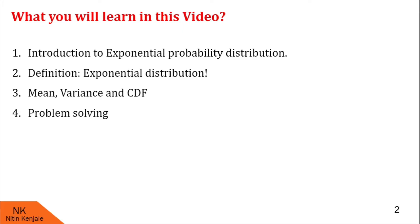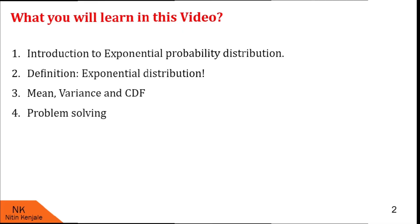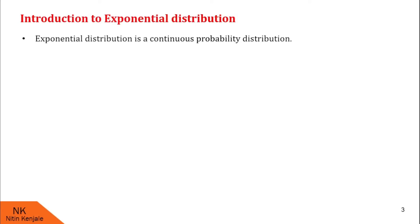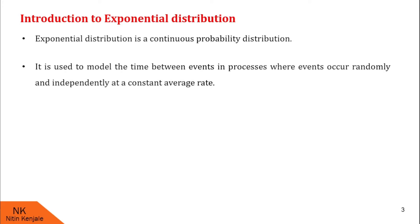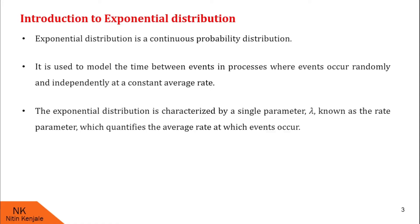Now let us begin with the introduction to exponential probability distribution. Exponential distribution is a continuous probability distribution — that means the variable which follows exponential distribution is continuous in nature. It is used to model the time between events in processes where events occur randomly and independently at a constant average rate. The exponential distribution is characterized by a single parameter lambda, known as the rate parameter, which quantifies the average rate at which events occur.